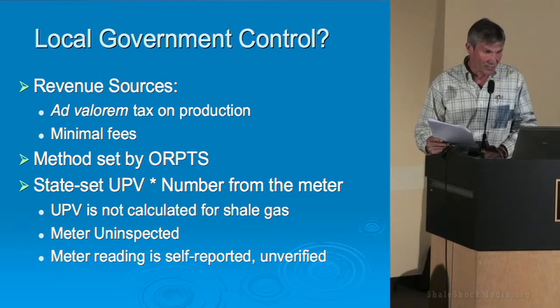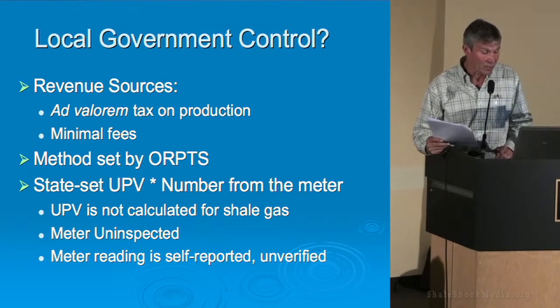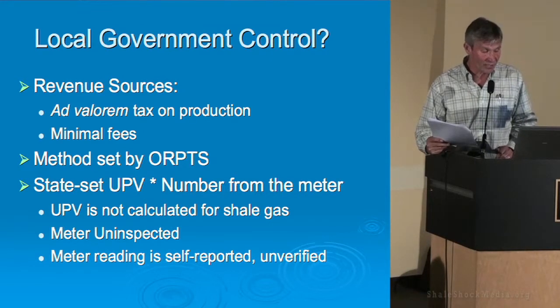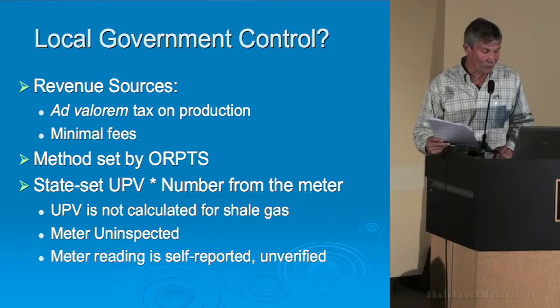The unit production value (UPV), which is a key part of the assessment value, is multiplied by the number from the meter, and that is how the assessment is calculated. The UPV is not calculated for shale gas and has not been. So any estimates as to how much revenue municipalities will receive from shale gas are purely estimates, because that number has not been determined yet. The meters are uninspected, and the meter readings are self-reported and unverified. Apparently the gas industry has the luxury of telling the assessment office what their assessment would be worth.